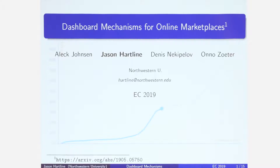This paper is about dashboard mechanisms for online marketplaces. In the background of this title slide, you can see an example of what I mean by a bidding dashboard. This shows, if you're a hotel on Booking.com, as you change the amount of commission you might pay, how you can expect to see the number of clicks on your hotel increase in terms of your visibility increase.